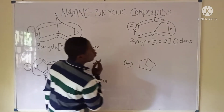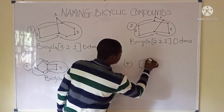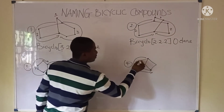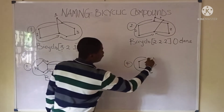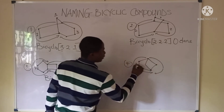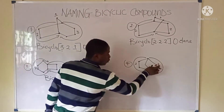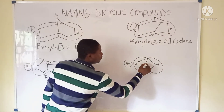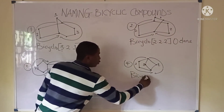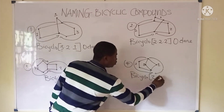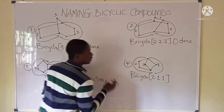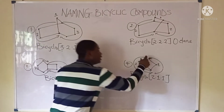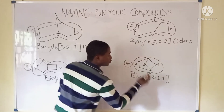For the last example, the bridgehead carbons are identified — these are the carbons joining the two cyclic compounds. Moving from one bridgehead carbon to the other from the left, we have two carbons. Moving between the bridgehead carbons from the right, we have one carbon. There is also one carbon between the two bridgehead carbons.